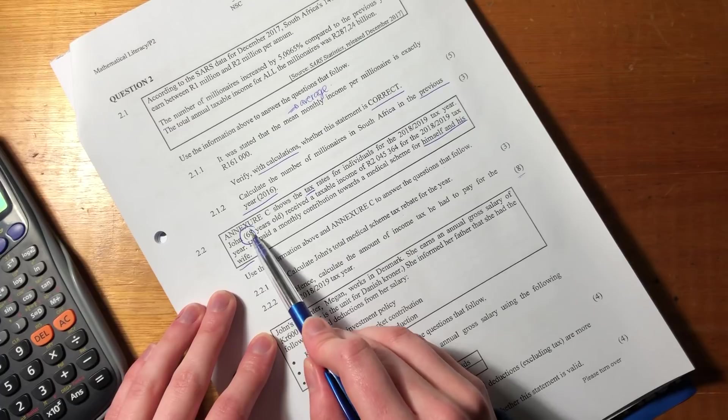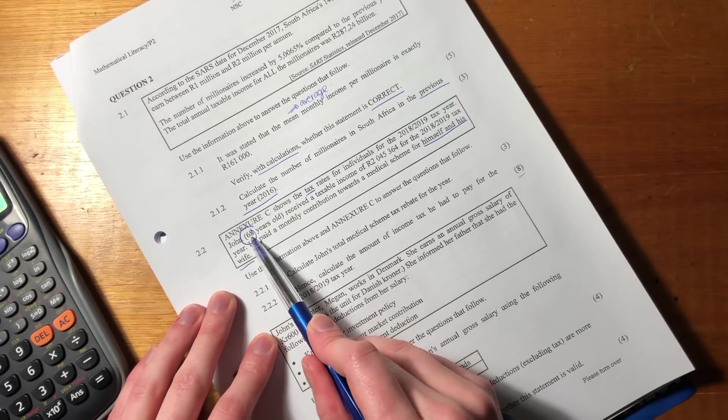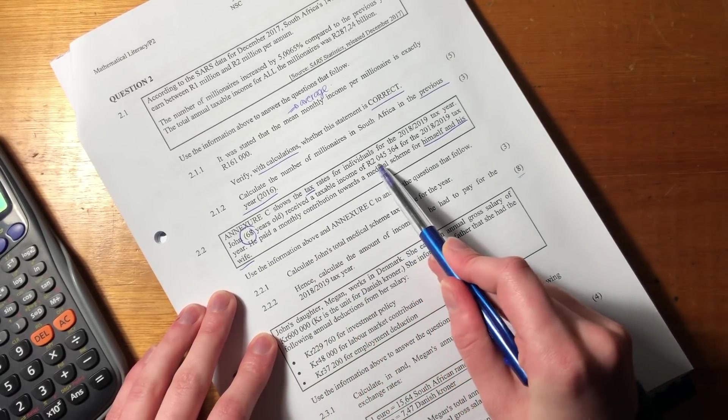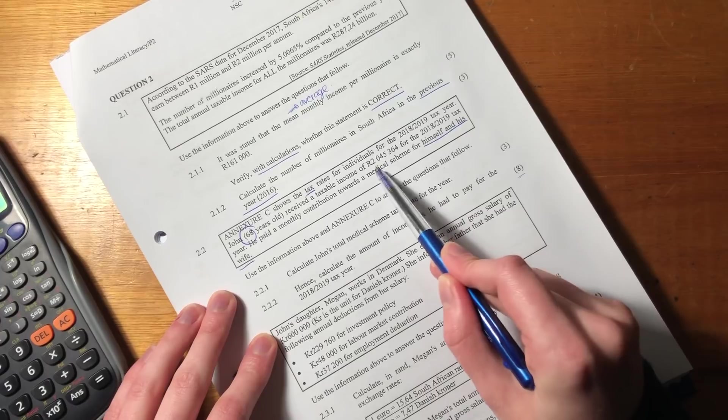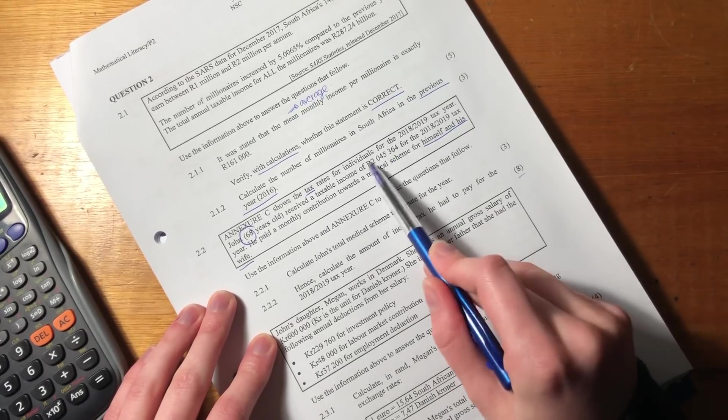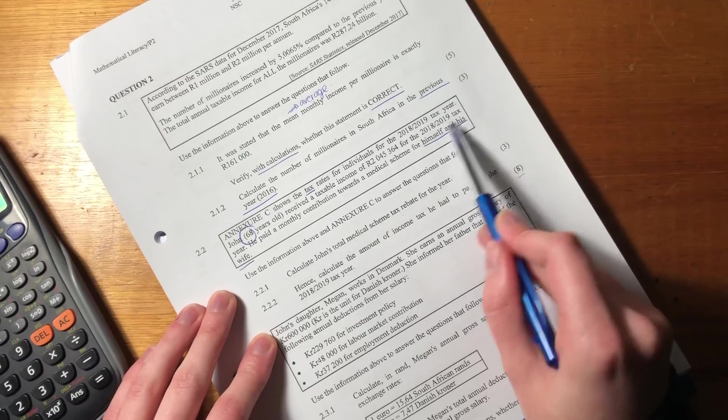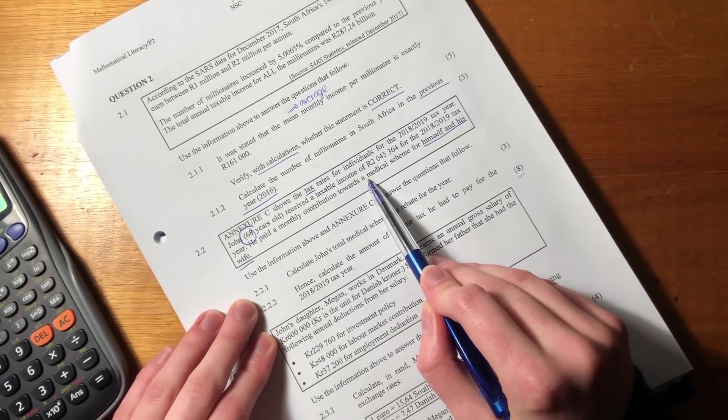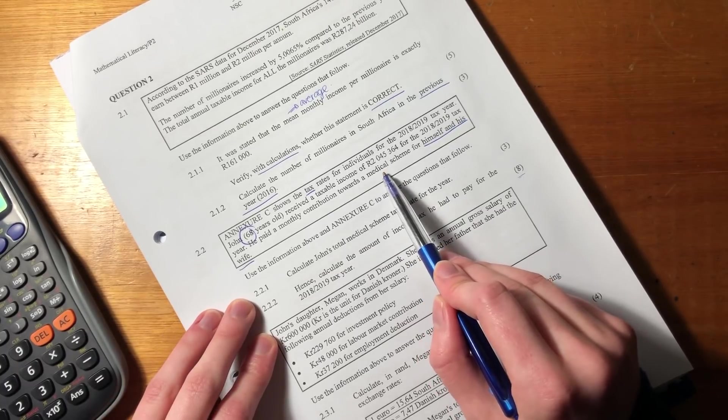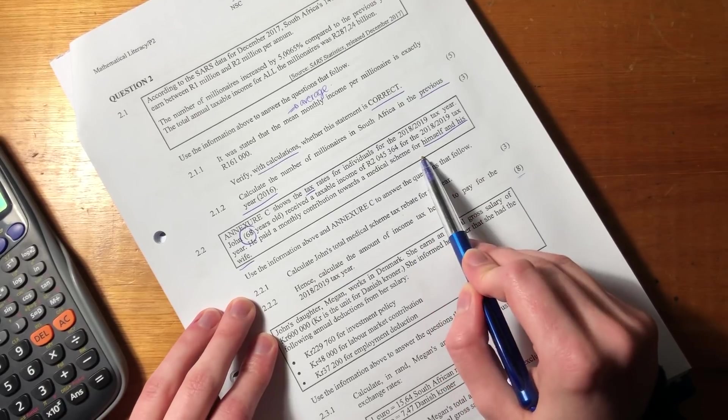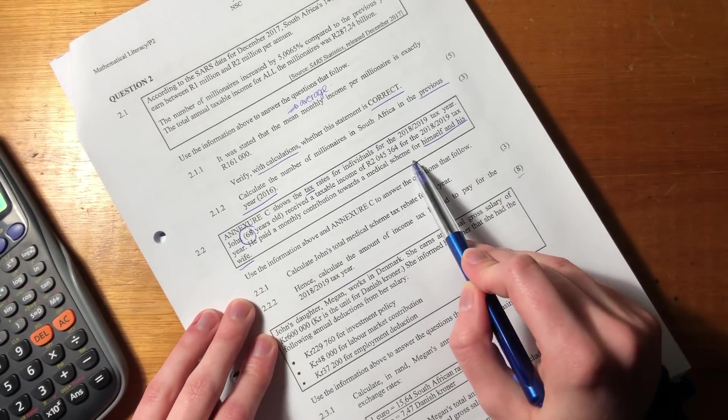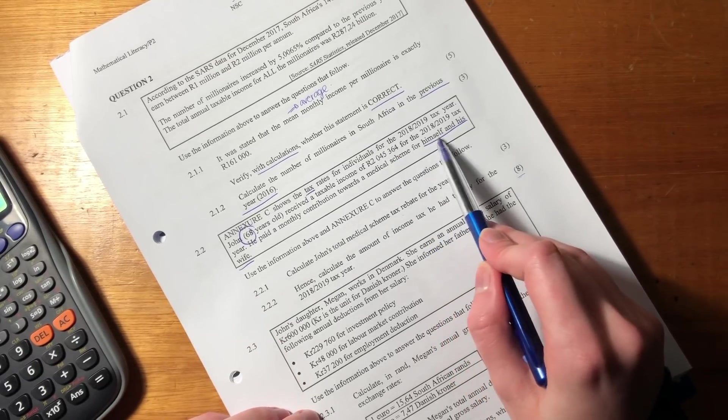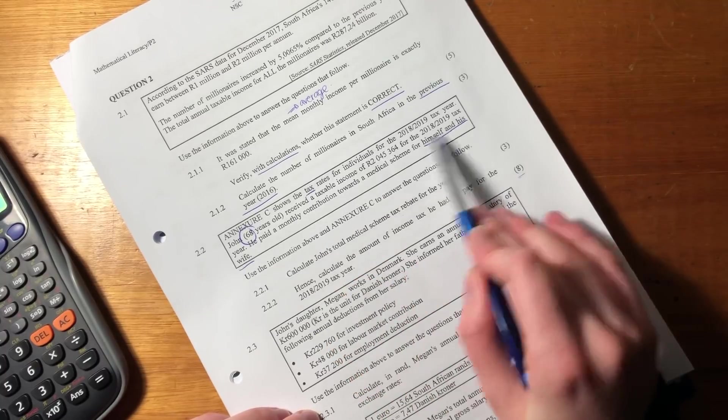So it says John, who is 68 years old, that is important, right? Rebates are based on your age. Receives a taxable income of this much, 2,045,364, right? So he actually earns over 2 million for the tax year. He paid a monthly contribution towards a medical scheme. So remember medical scheme is a type of insurance, indemnity insurance. You pay a set contribution to a medical scheme and they pay for your healthcare needs, your expenses for himself and his wife. So there's two of them, that's important.